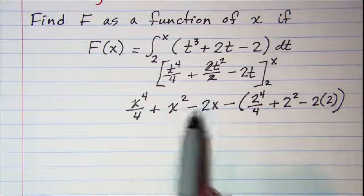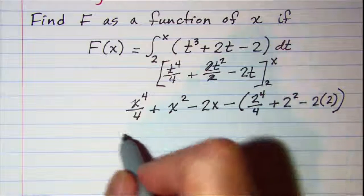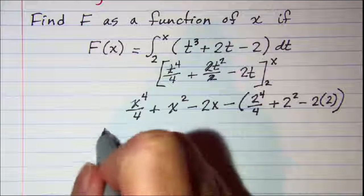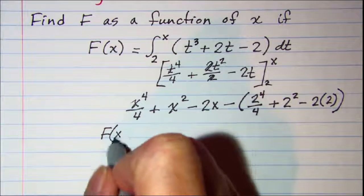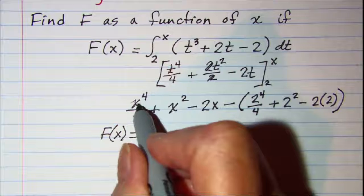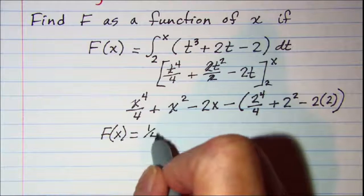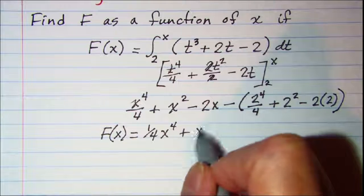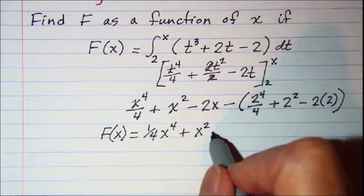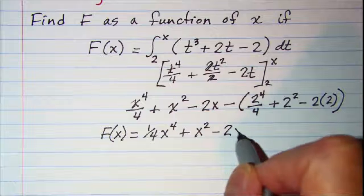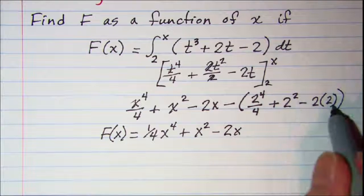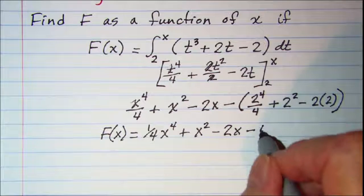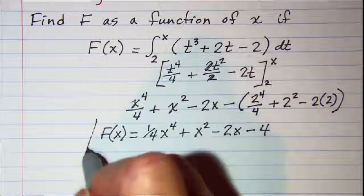So this simplifies to f of x is equal to 1 fourth x to the fourth plus x squared minus 2x, and then this simplifies to 4. So that's 1 fourth x to the fourth plus x squared minus 2x minus 4.